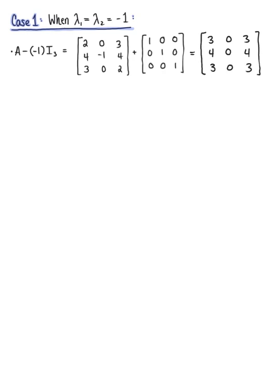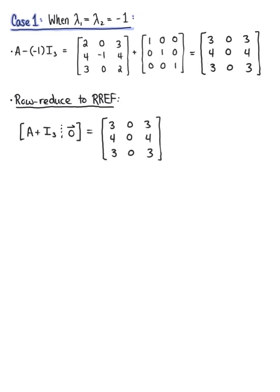We're now ready to row-reduce this matrix to row-reduced echelon form to find the set of all possible non-trivial solutions. We can simplify right away: dividing the first row by 3 gives [1, 0, 1]; dividing the second row by 4 gives [1, 0, 1]; and dividing the third row by 3 gives [1, 0, 1].